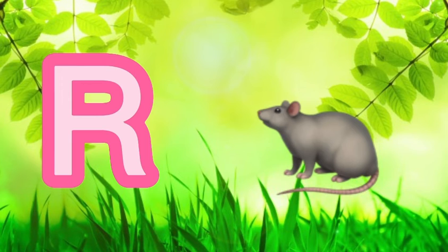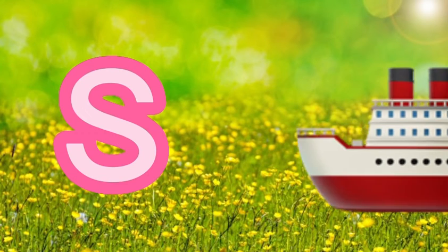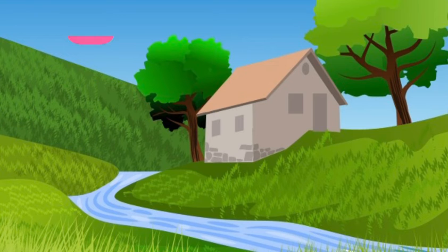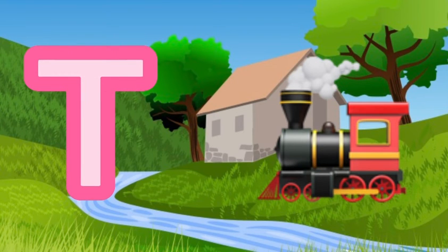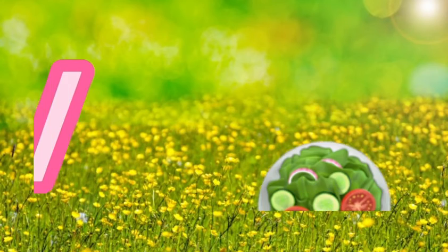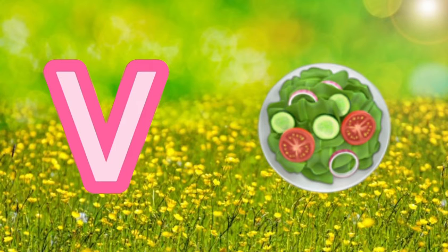R for rat, S for sheep, T for train, U for umbrella, V for vegetable.